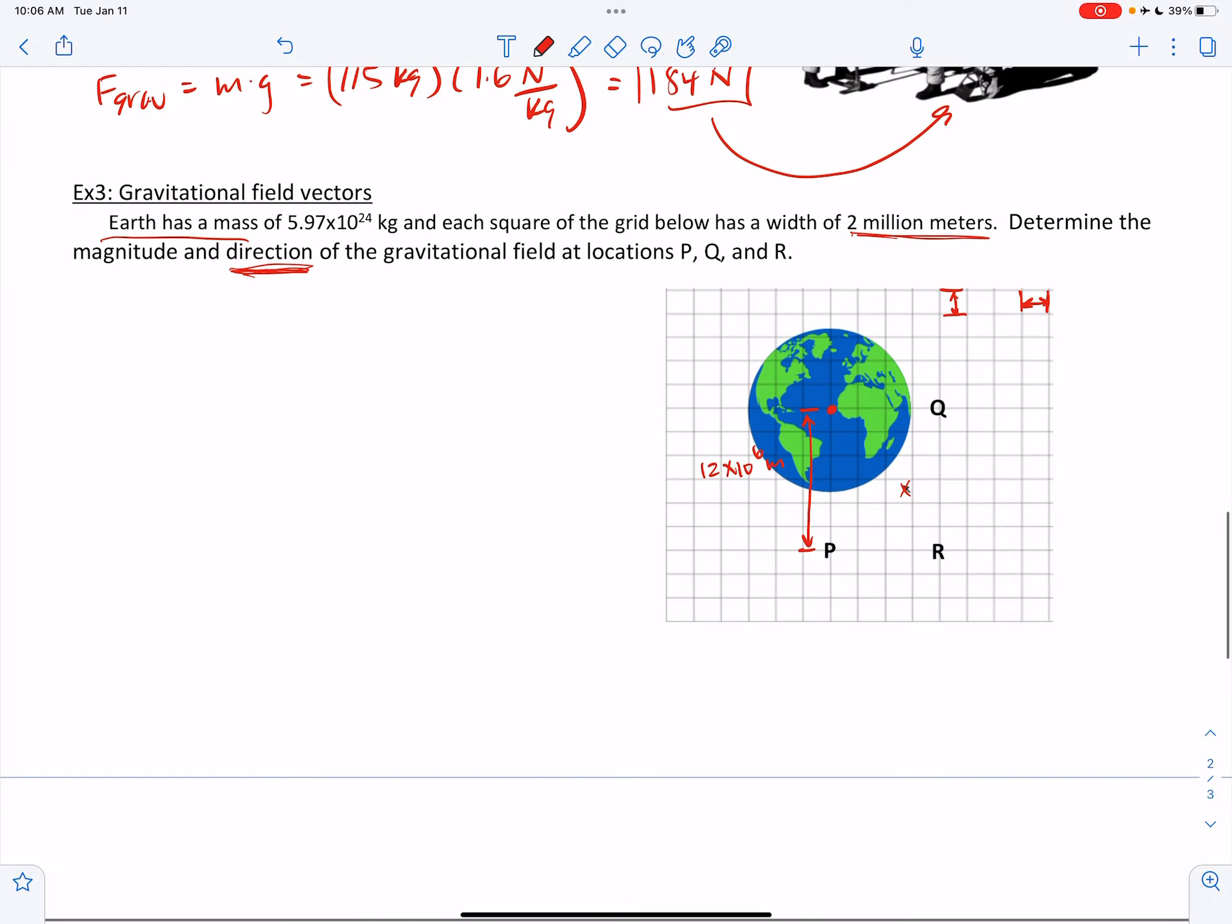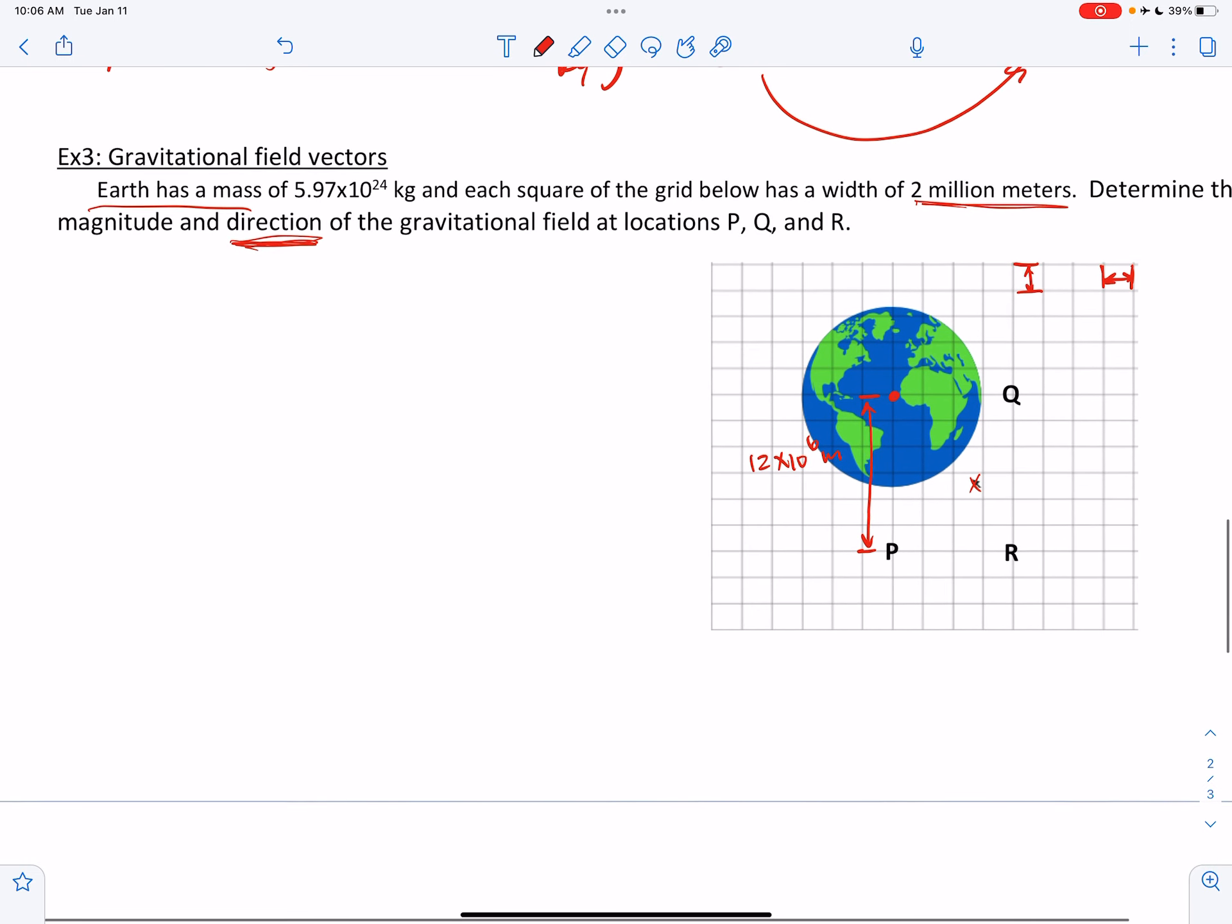Alright. So let's take that distance and our gravitational field equation and figure out the strength of the field here at location P. So at location P, the field strength, which we use as g, lowercase g, is equal to the universal gravitational constant times the mass, in this case of the Earth, divided by the radius away from the Earth that you are, squared.